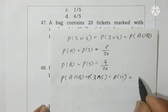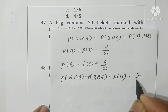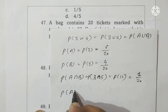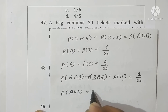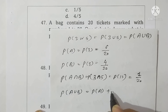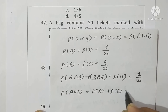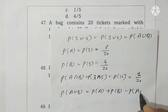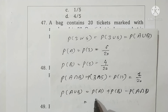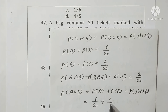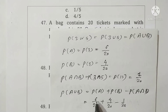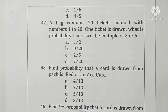Probability of A union B equals probability A plus probability B minus probability A and B, which is 6/20 plus 4/20 minus 1/20 equals 9 upon 20. Option B is correct.